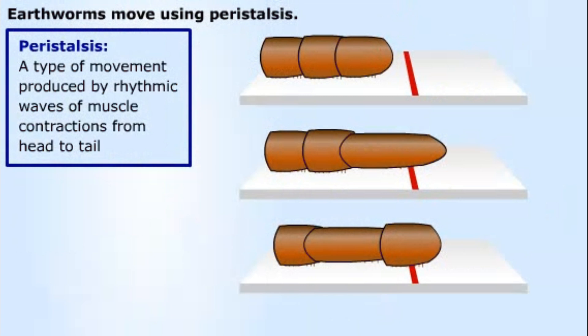Each segment of an earthworm is a separate compartment. Earthworms move by peristalsis, a type of movement produced by rhythmic waves of muscle contractions from head to tail.